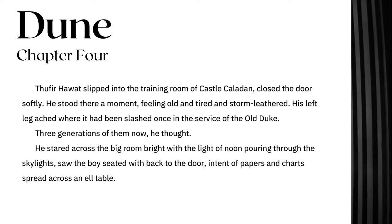Dune, Chapter 4: 'The fear her watch slipped into the training room of Castle Caladan, closed the door softly. He stood there a moment, feeling old and tired and storm-leathered. His left leg ached where it had been slashed once in the service of the old Duke. Three generations of them now, he thought. He stared across the big room, bright with the light of noon pouring through the skylights, saw the boy seated with back to the door, intent on papers and charts spread across an L table.'